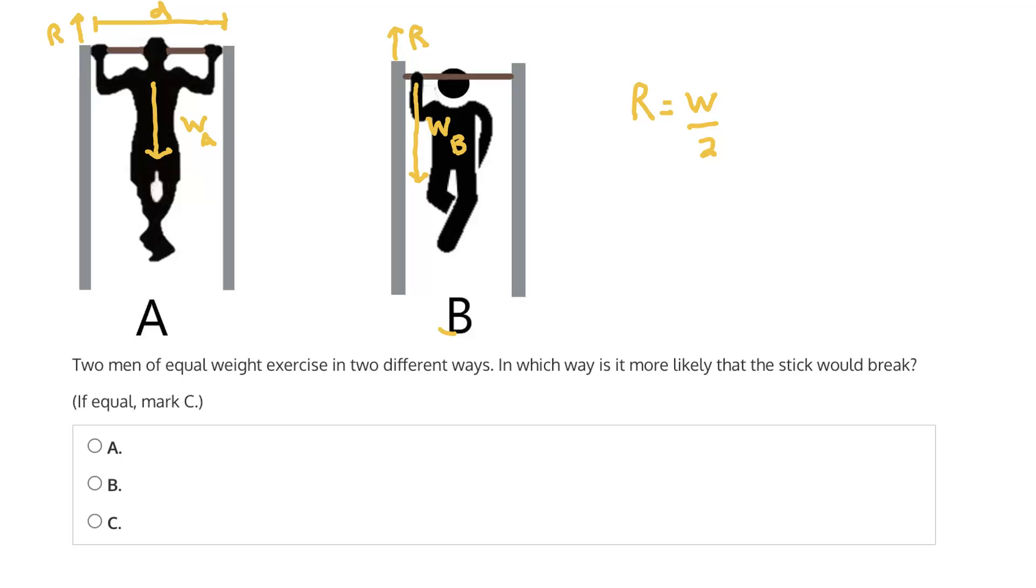Now, in situation B, we have something different, because the weight is distributed asymmetrically, close to that left-hand side, which means the reaction forces are simply going to be equal to the weight.